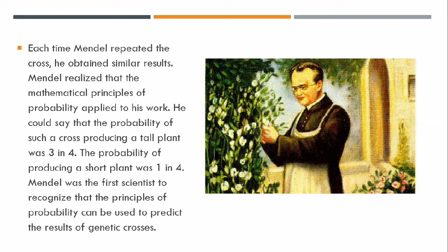Mendel realized that the mathematical principles of probability applied to his work. He could say that the probability of such a cross producing a tall plant was three in four, and the probability of producing a short plant was one in four — meaning only one plant would be short out of four offspring. Mendel was the first scientist to recognize that the principles of probability can be used to predict the results of genetic crosses.